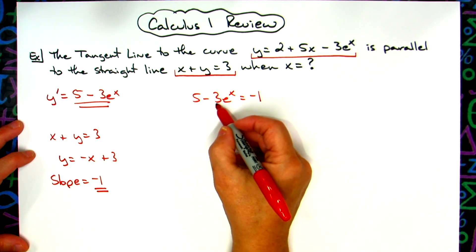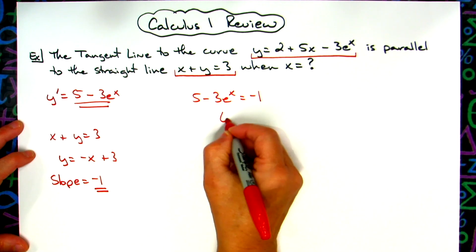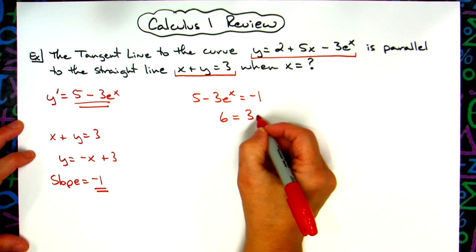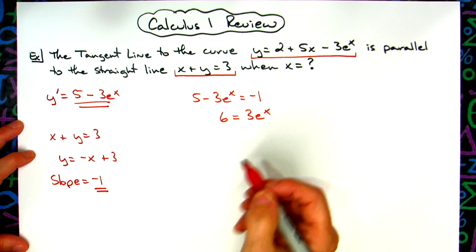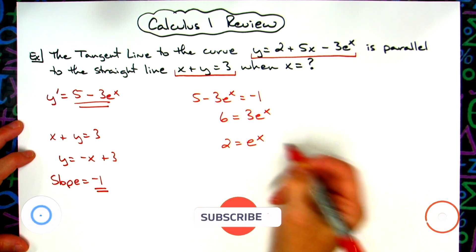Let's go ahead and move that 3e^x to the right and add 1 to both sides. So I'll have 6 = 3e^x. If we divide both sides by 3, we'll have 2 = e^x.